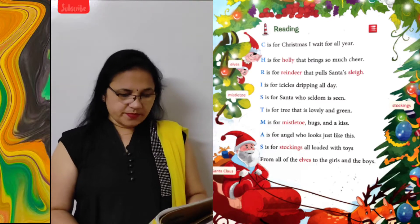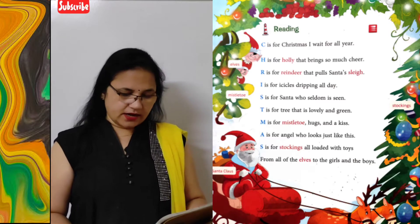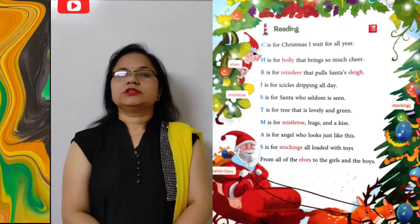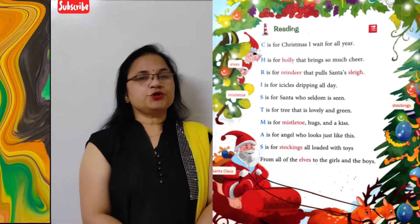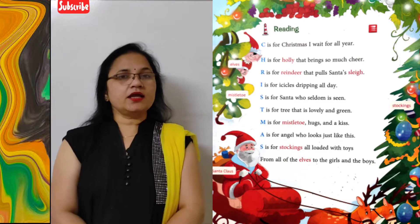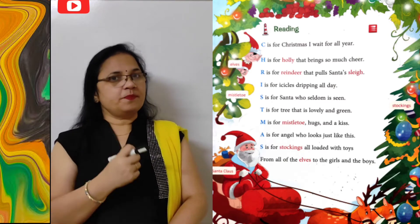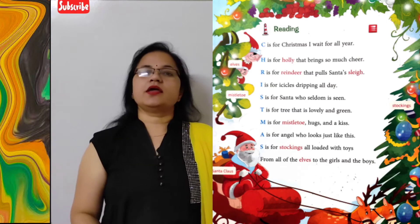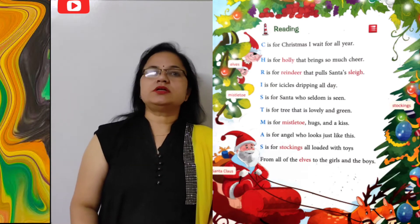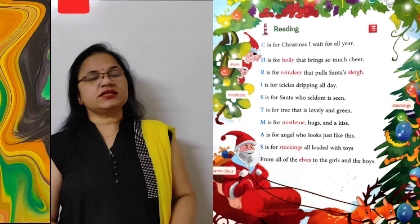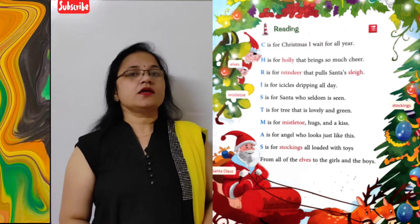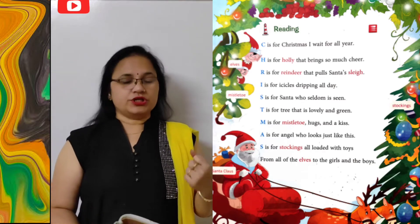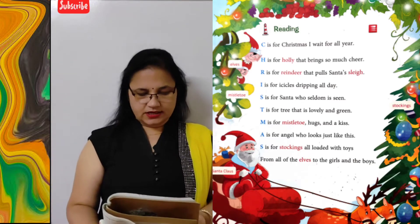M is for mistletoe, hugs and a kiss. Mistletoe ek hemi-parasitic plant hai jo kisi jhaadi ya kisi ped ke sahare nutrition praapt karta hai. So mistletoe — hugs and a kiss — mistletoe ke liye, hugs ke liye, gale lagane ke liye aur ek doosre ko kiss karne ke liye.